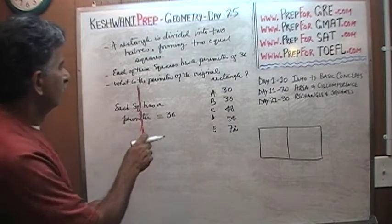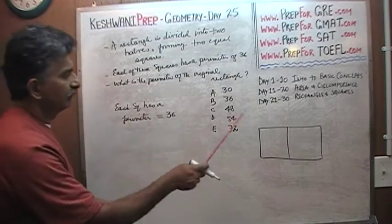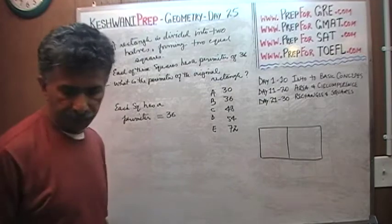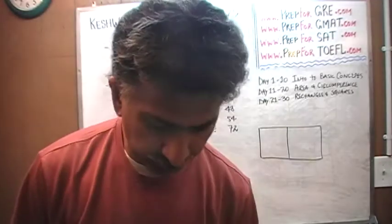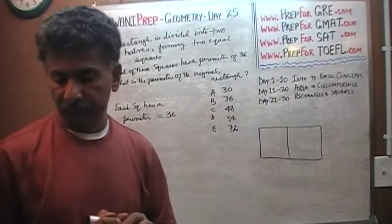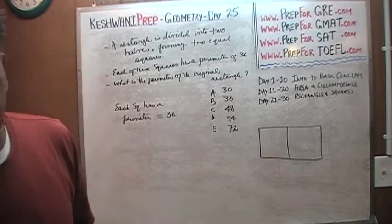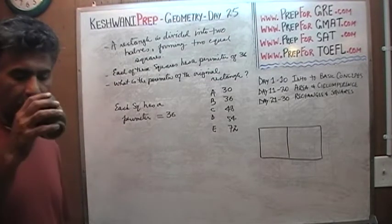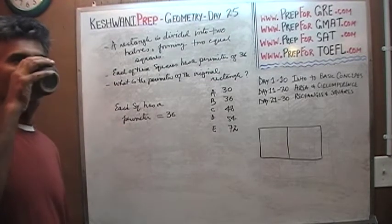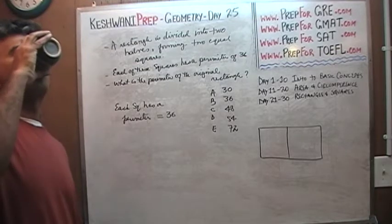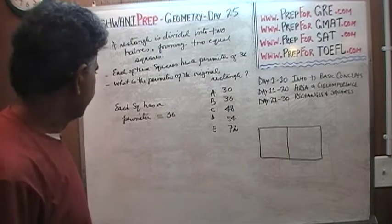The question simply is: what is the perimeter of the original rectangle? I want you to pause the video at this point, solve the problem yourself, and once you have the answer you can resume the video. I will give you a few seconds to pause and unpause.